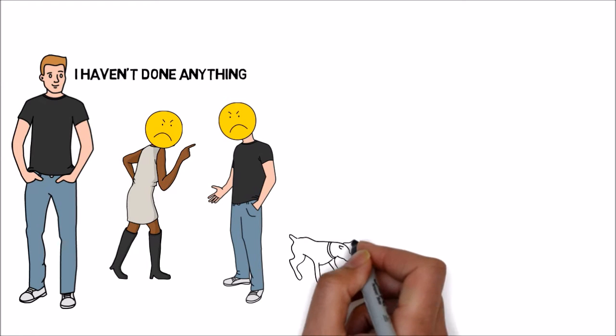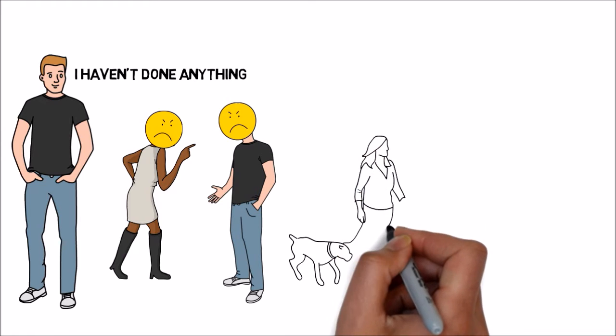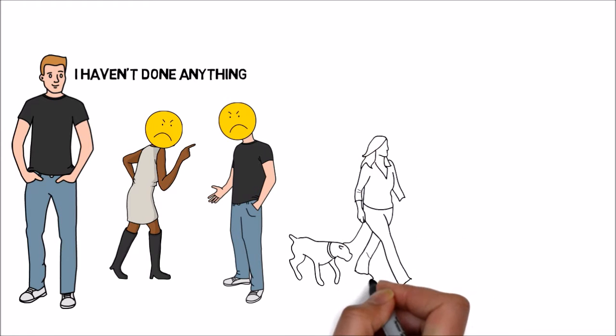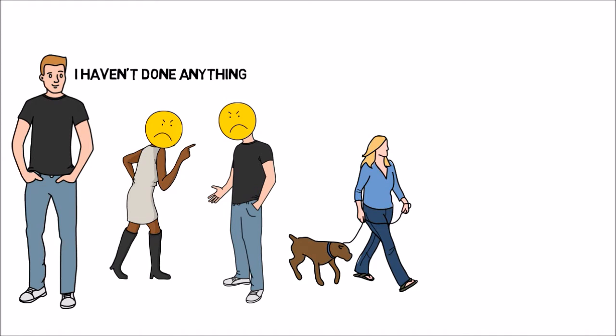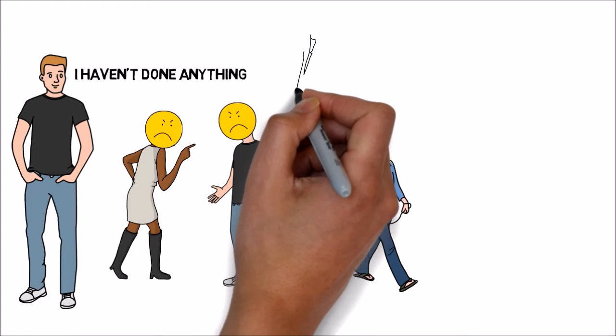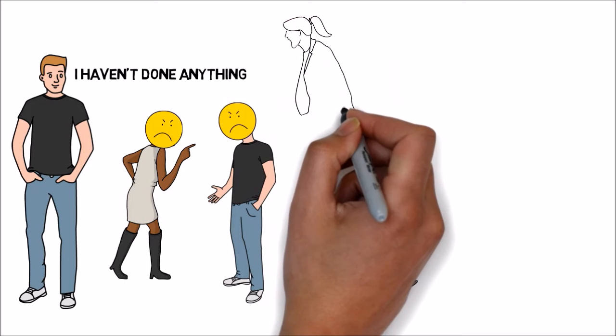B.F. Skinner, the world-famous psychologist, proved through his experiments that an animal rewarded for good behavior will learn much more rapidly and effectively than an animal punished for bad behavior. Later studies have shown that the same applies to humans. By criticizing, we do not make lasting changes and often produce resentment.